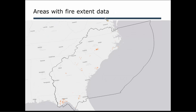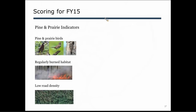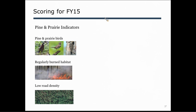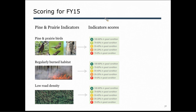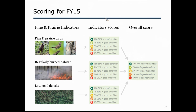We had spatial fire extent data in our geography and used the South Atlantic scoring system for indicators — specifically pine and prairie indicators like the pine and prairie bird index with bobwhite quail, Henslow's sparrow, and red-cockaded woodpecker, plus regularly burned habitat. Some things immediately responded to additional prescribed fire; others like low road density areas didn't respond as directly. For each indicator, you get a score based on how much is in good condition, then you merge them together into an overall score. So you're getting B's and C's that add up to a combined score — all quantitative.